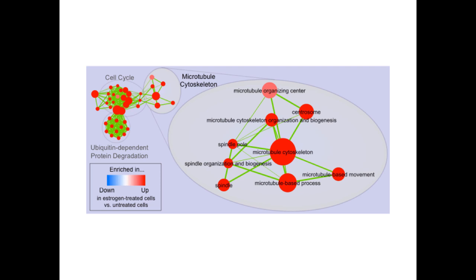If you zoom in on one of the themes, you can see nodes with different pathway names — microtubule organizing center, centrosome — and these are all related as a sort of cytoskeletal theme. That's a fairly simple idea. It's not that complicated — it's really just a visualization method meant to help you interpret the results of something like GSEA. You don't have to use this method; GSEA provides nice reports, and if you're happy with that, you can use those. This method tends to be more useful if you have dozens or hundreds of pathways, and then it's useful to identify major themes in an automated way.